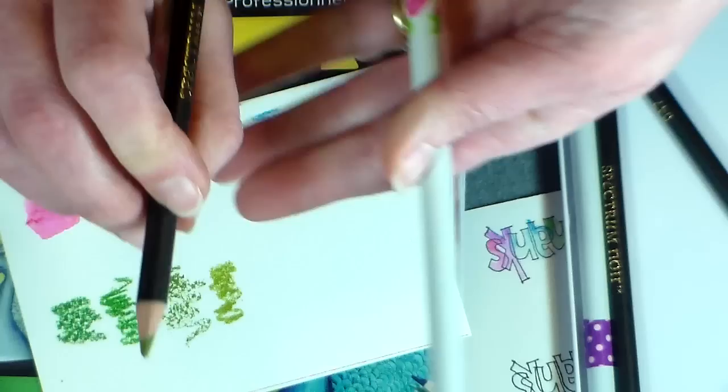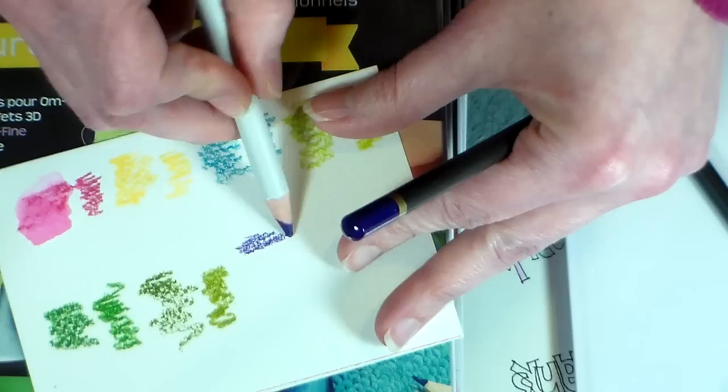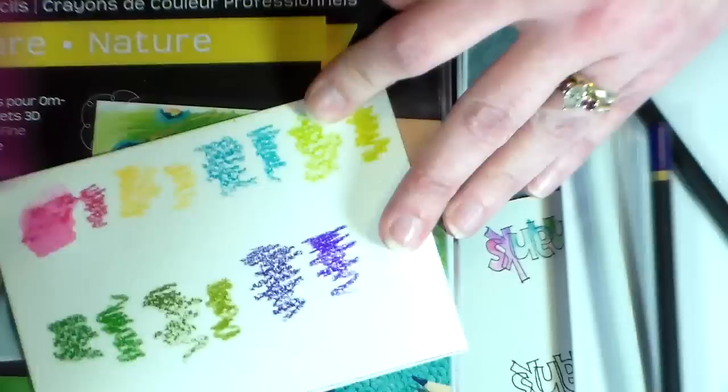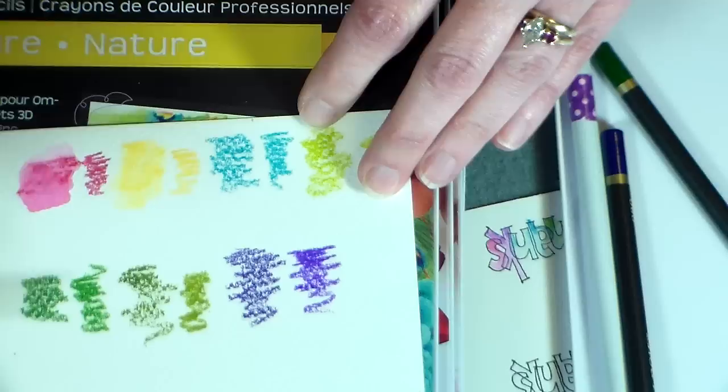And I've got the 80 Prima and the 80 Spectrum Noir. All right, I'm just gonna wet the Prima just so you can kind of see - look at that! They're the same colors, just one is water-soluble and one isn't, but it's the exact same color line.